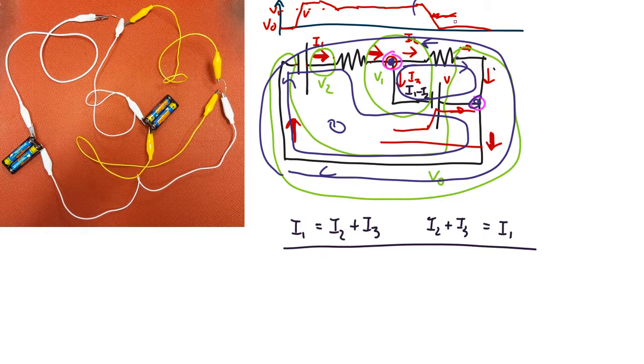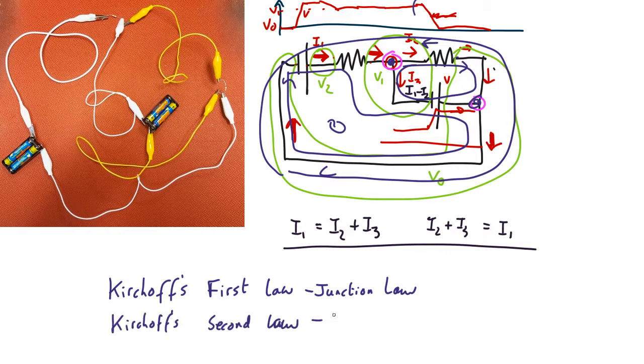So we have Kirchhoff's laws: Kirchhoff's first law, the junction law, which says that currents in and out of any junction must sum to zero. And Kirchhoff's second law, the voltage law, which says that around any loop, the voltage at the end must be the same as the beginning, so the voltage must sum to zero around any loop.